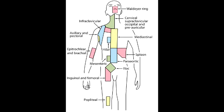What is the primary lymph node drainage site for the sigmoid colon? The sigmoid colon drains into the colic lymph nodes, which leads to the inferior mesenteric lymph nodes.